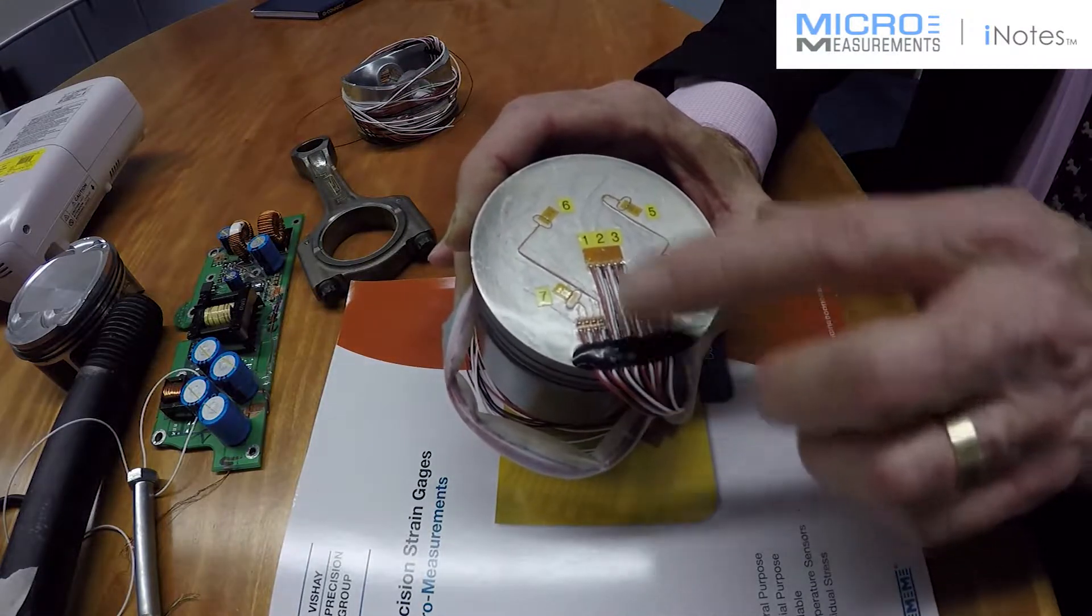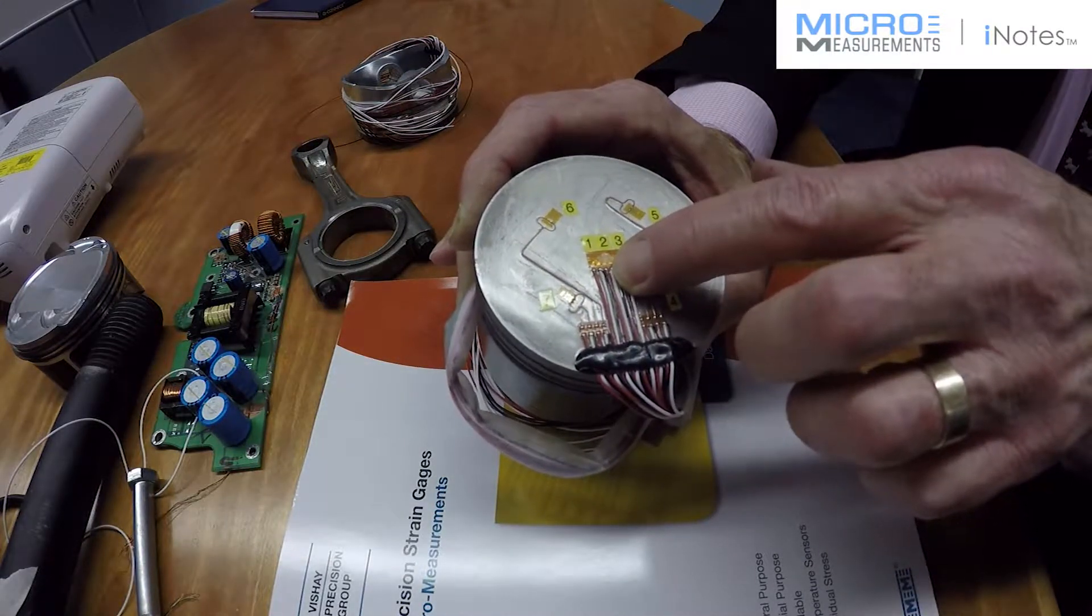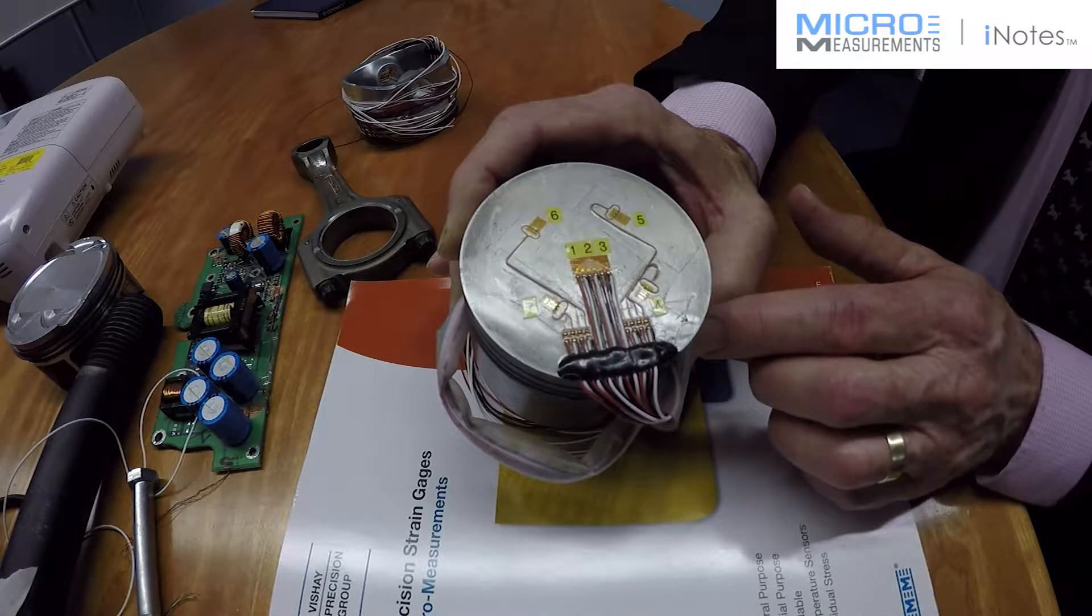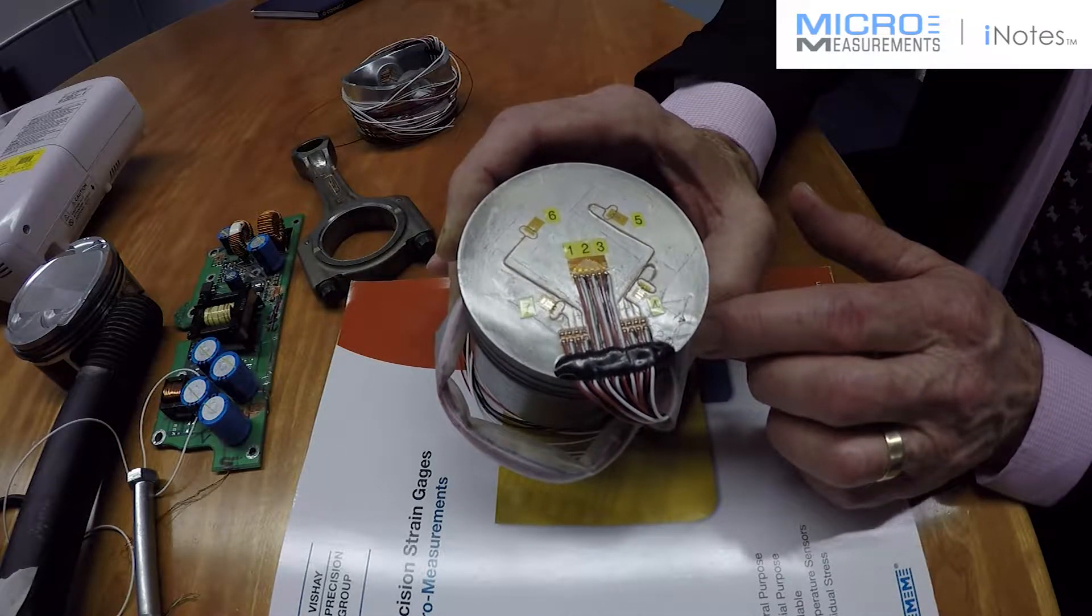What we've provided here is a three-element strain gauge rosette which will keep a measure of where the principal strain direction is moving during the sequence of pressurization.